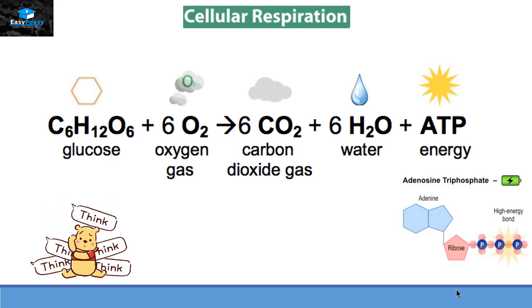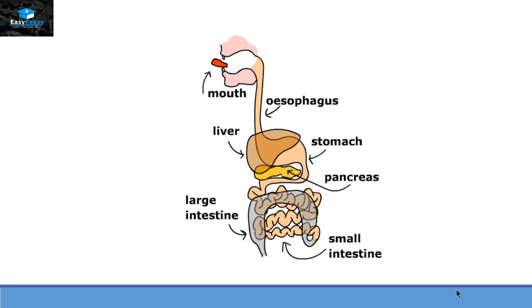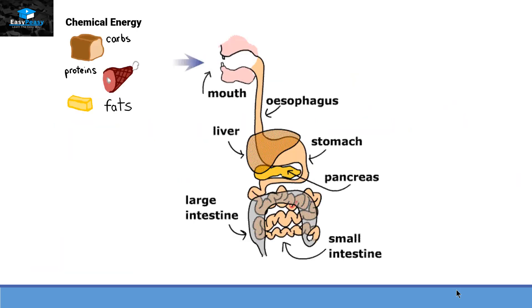Now the question is: inside our cell, where does this glucose come from? The answer to this question is related to our digestive system. So we take in food as a chemical energy.